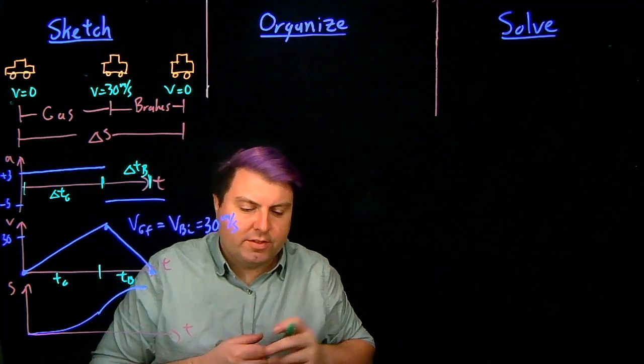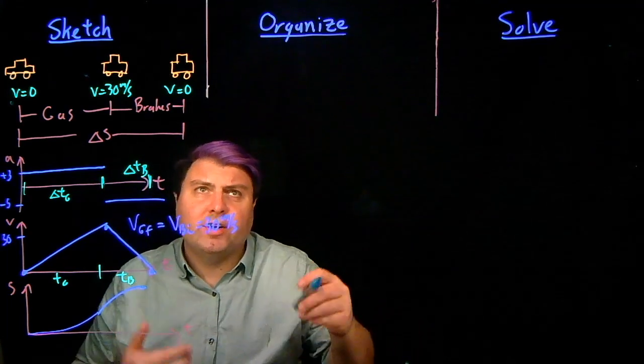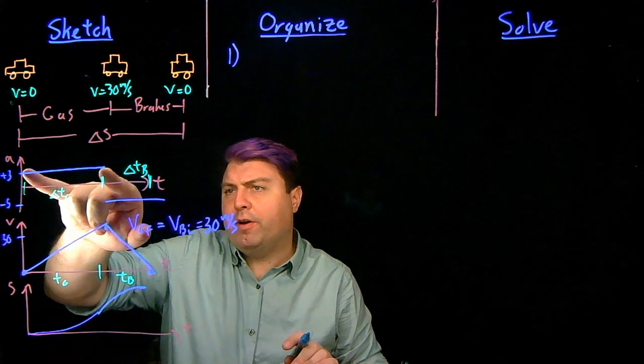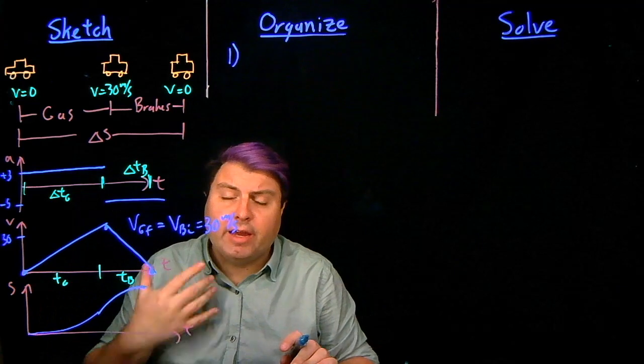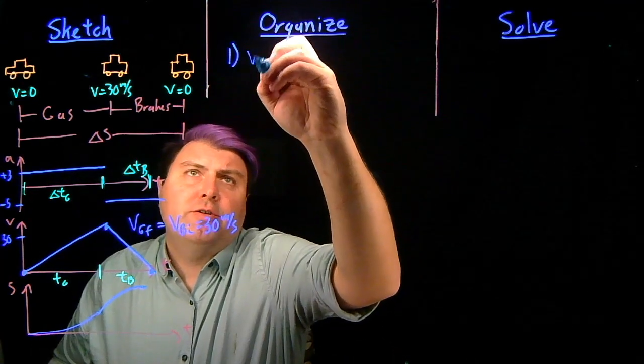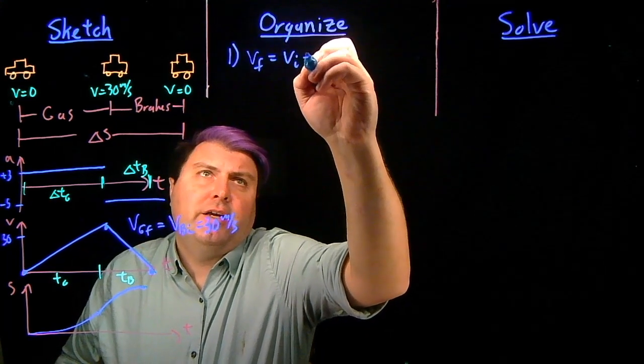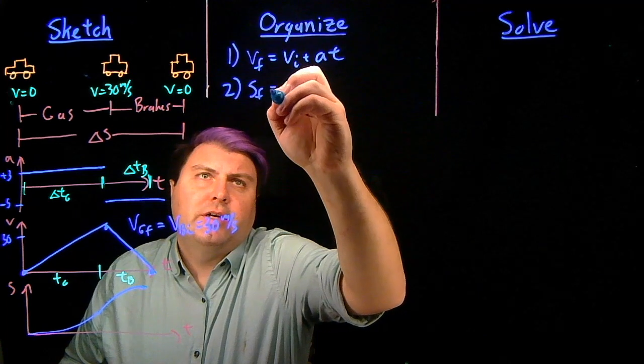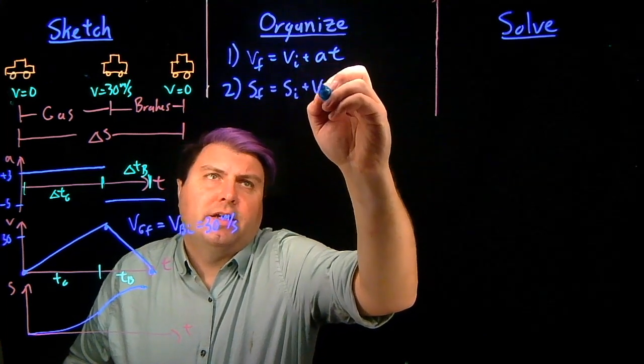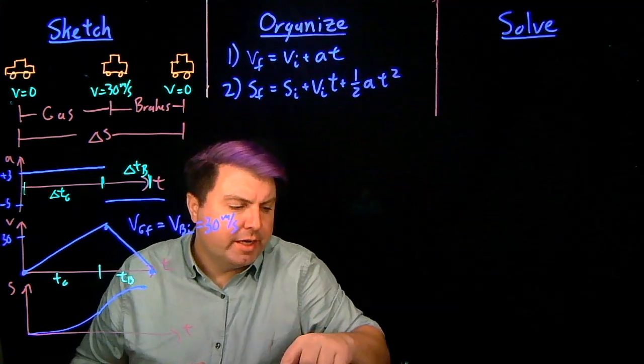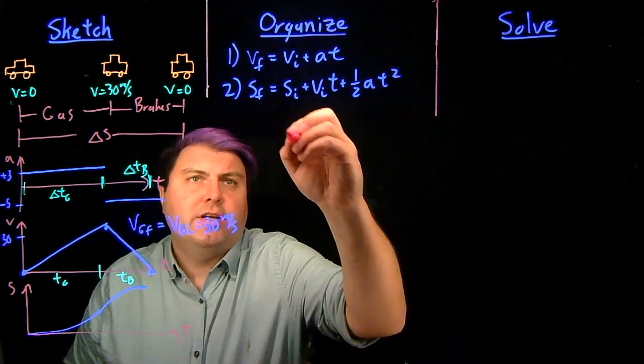So as we organize, it's very good to write our kinematic equations. While we are in the gas, while we are in the brakes, we can use the kinematic equations. We can't just use them willy-nilly for all. So we have equation one, VF equals VI plus AT, and equation two, SF equals SI plus VIT plus one-half AT squared. And we want to fill out our knowns and unknowns.